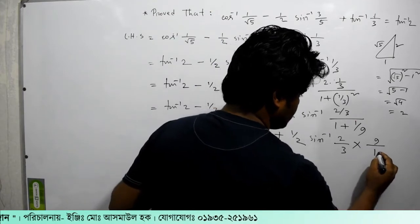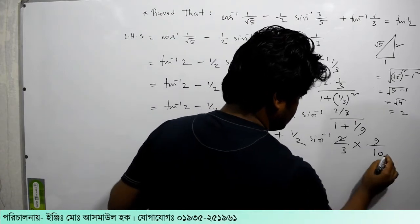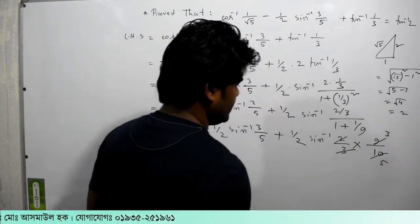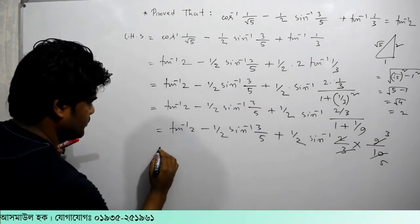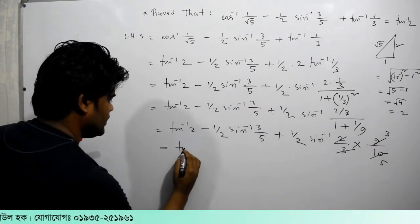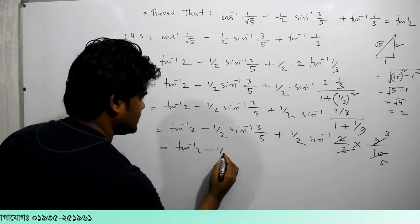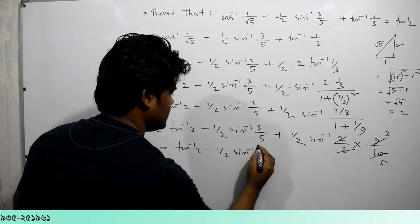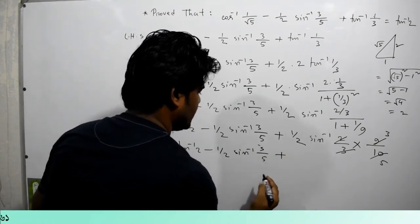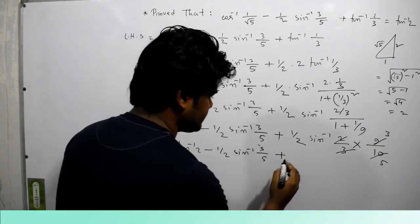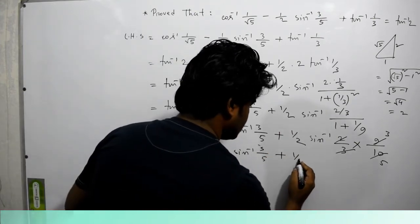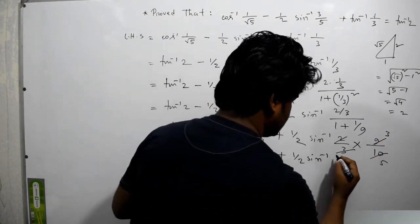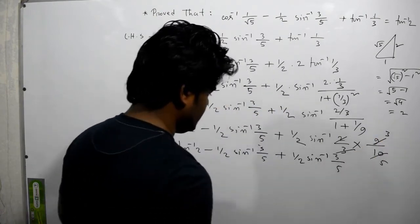So we take and cut, 5 and 3. Taking a line of 2 minus half sine inverse 3 by 5 plus half sine inverse — this simplifies to half sine inverse 3 by 5.